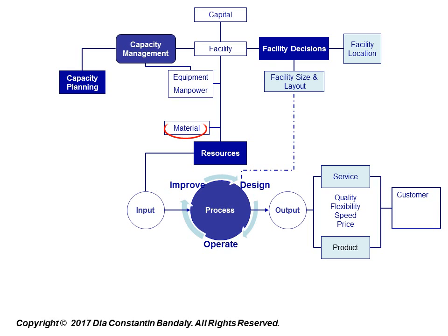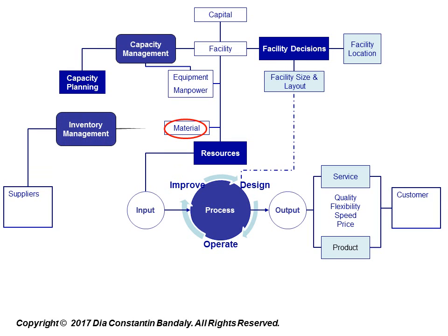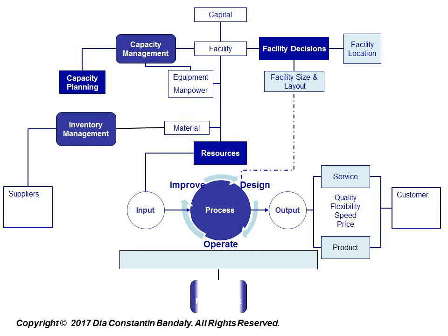Material flows almost continuously into a firm's process. Operations managers control this flow from suppliers using various inventory management models. To ensure high quality of output, operations managers use various methods to monitor the quality of raw material, work in progress, and finished goods.